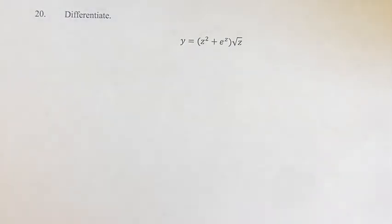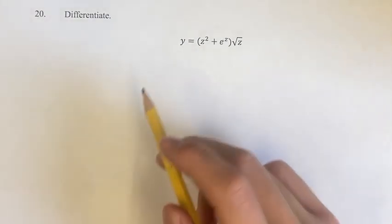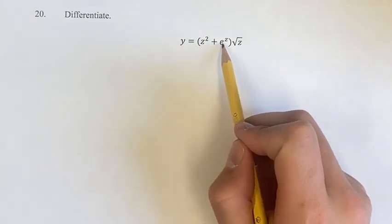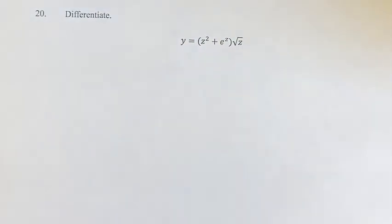Hello, and welcome back to the video. This problem, we're differentiating the function y equals z squared plus e to the z times the square root of z.